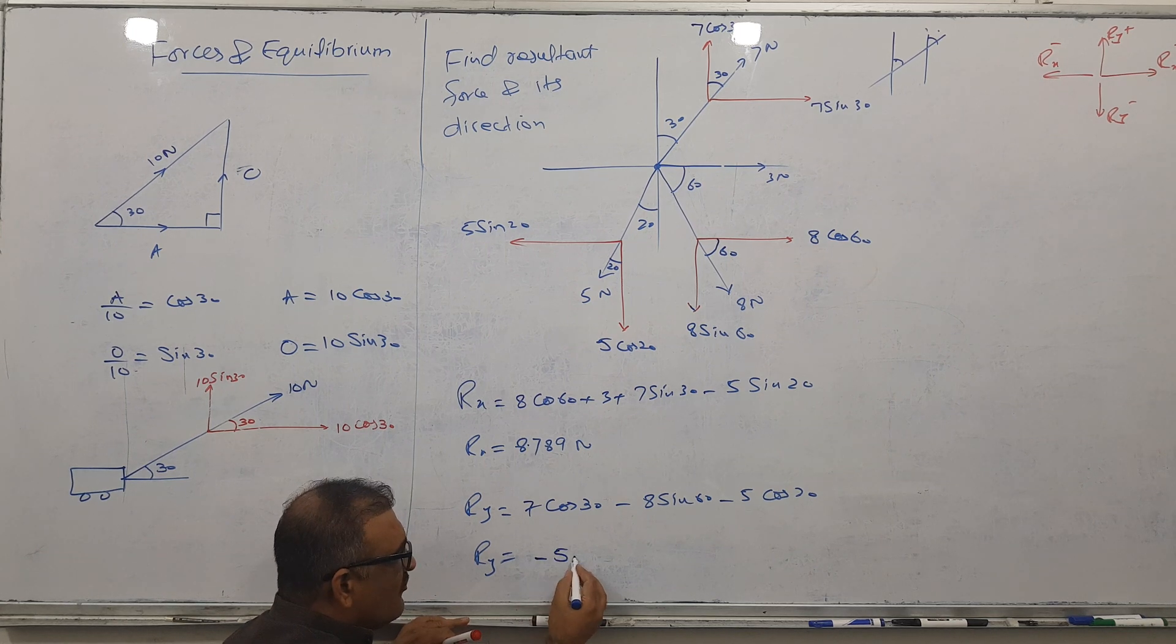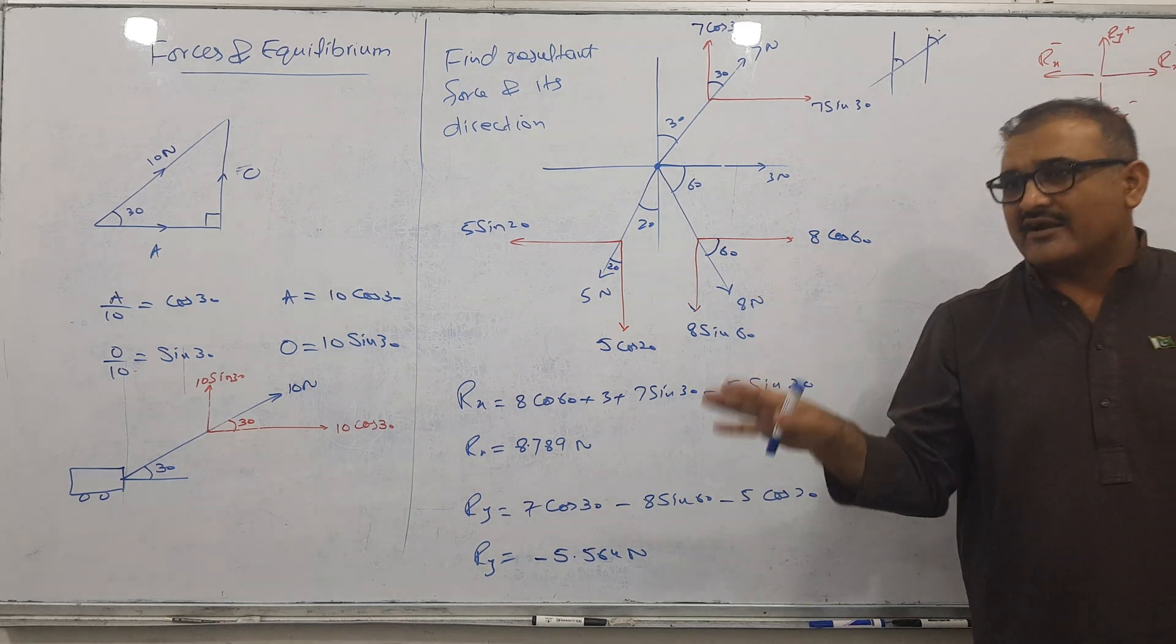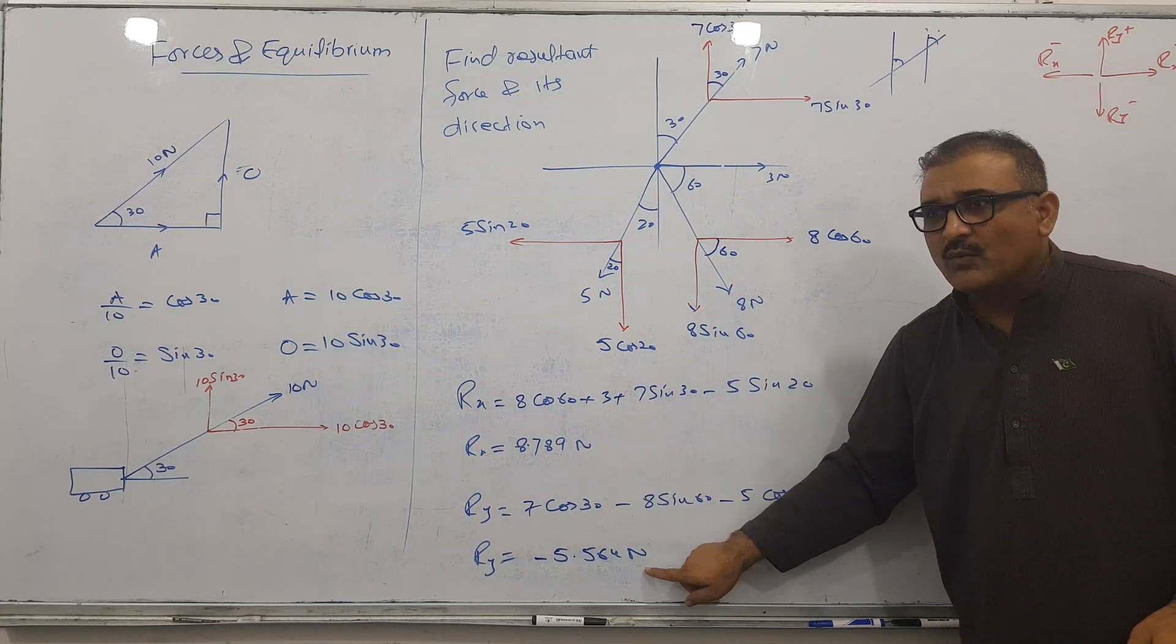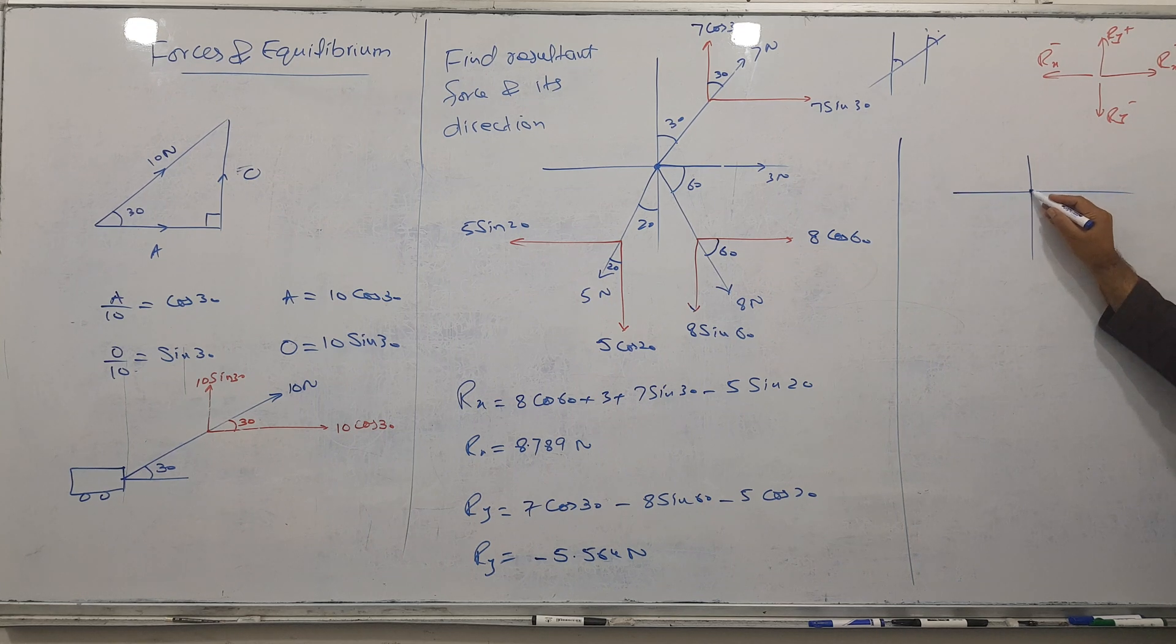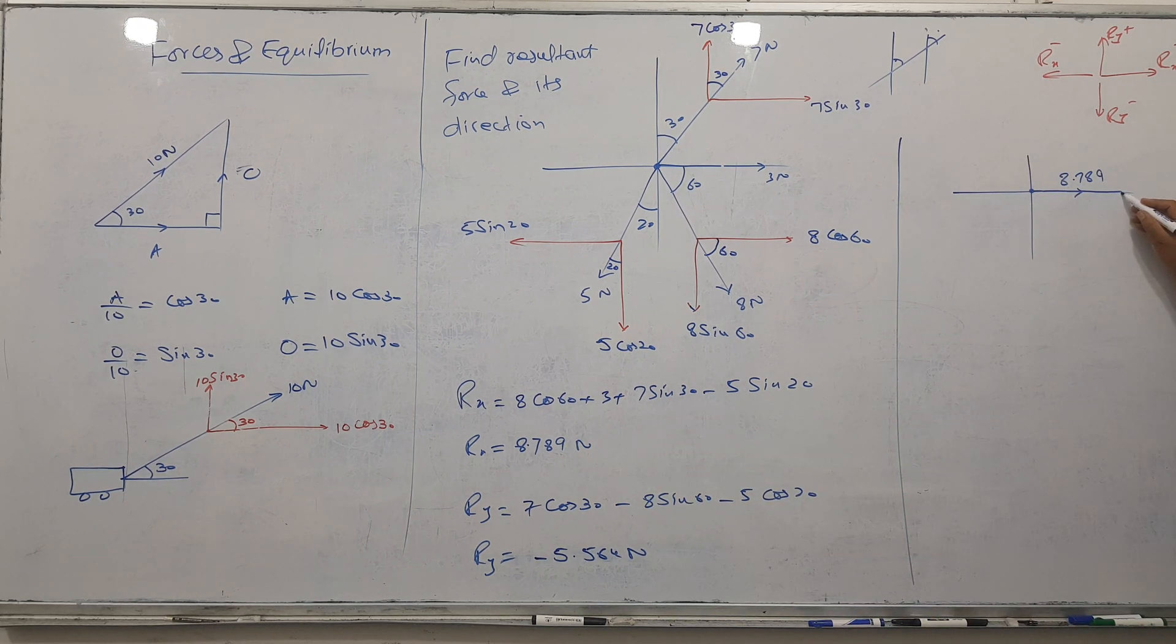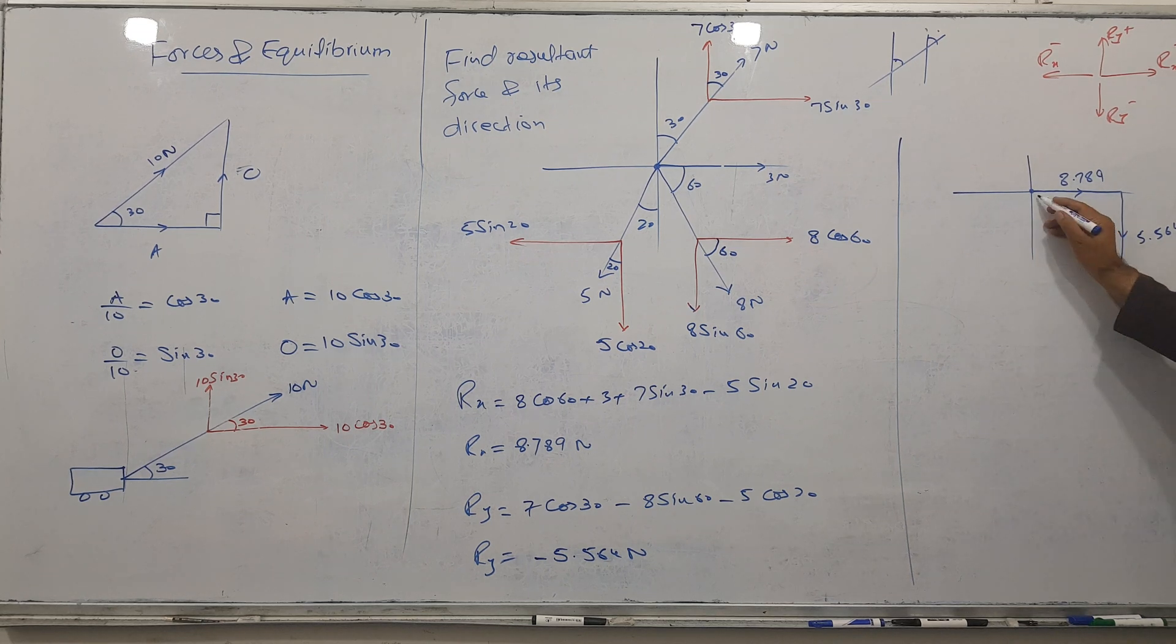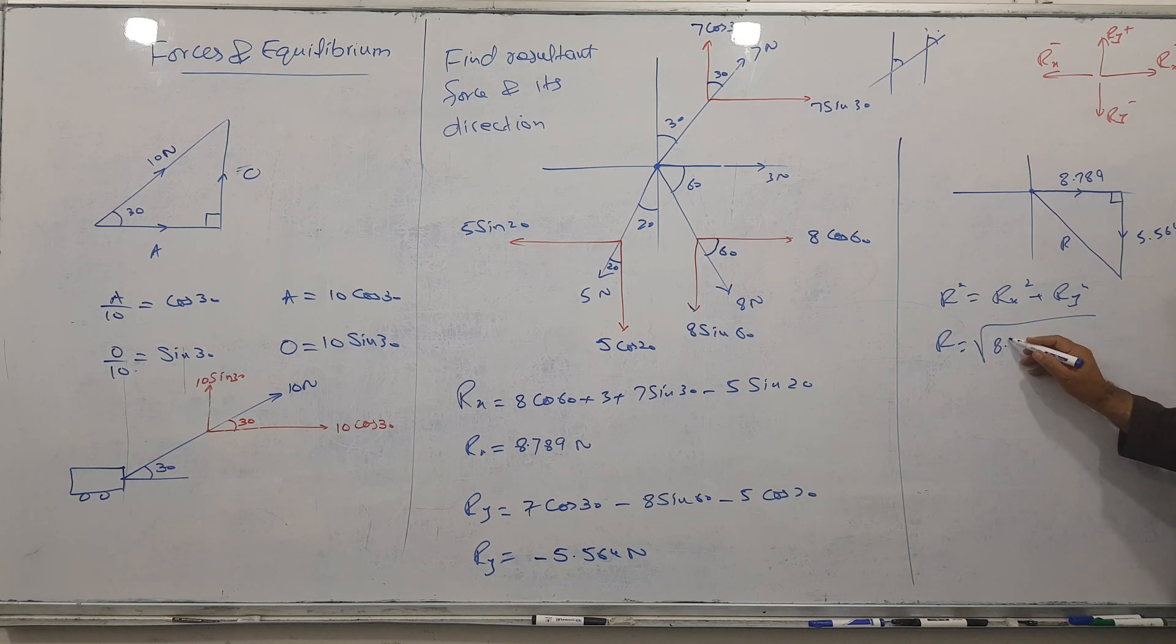Minus 5.564 Newtons. After getting Rx and Ry, you will make an extra diagram. Rx is positive from origin, so you make Rx 8.789. From this corner I make Ry, which is negative so I plot it downwards at 5.564. This is called R. Using Pythagorean theorem: R squared equals Rx squared plus Ry squared. Please take the root.